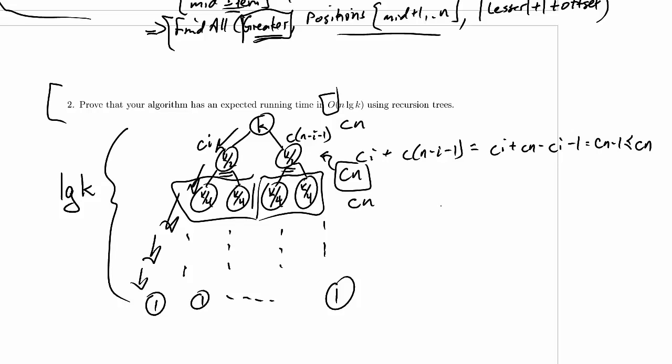So when we sum up all of the work, we're going to get cn log k. And that is an element of big O of n log k. It's actually an element of big theta of n log k. But because we've been using less than equal to here, we just get a big O bound. And that is all we needed.